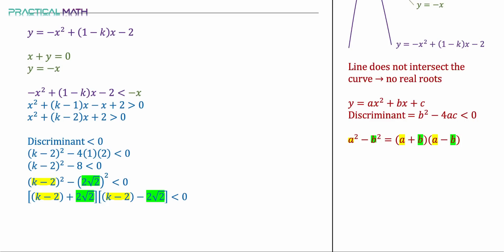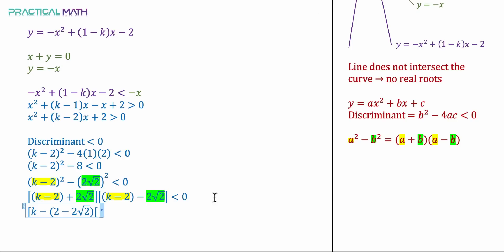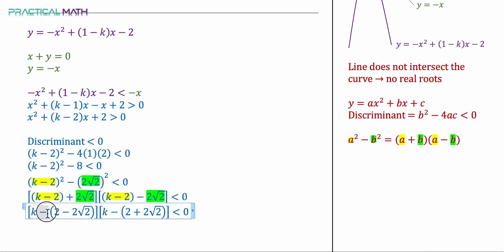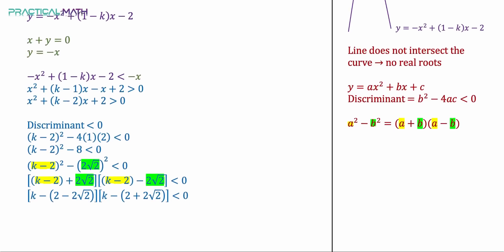Presenting the factored form nicely: (k minus (2 minus 2 root 2)) times (k minus (2 plus 2 root 2)) is less than 0. Check the signs carefully — the double negatives give a positive, so this is correct. Now we can solve this quadratic inequality.